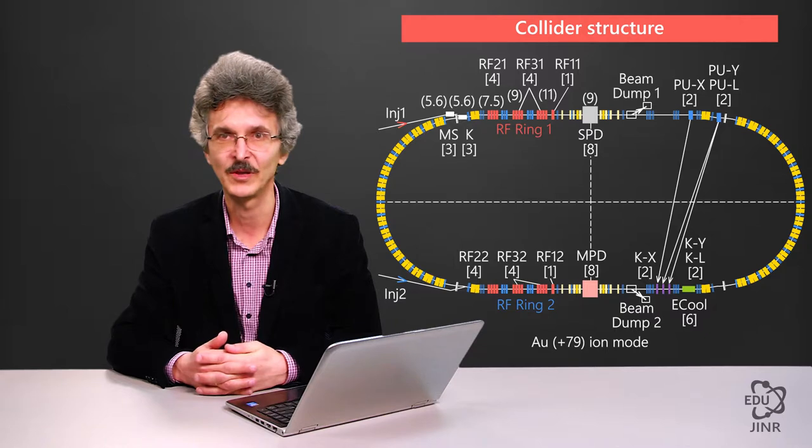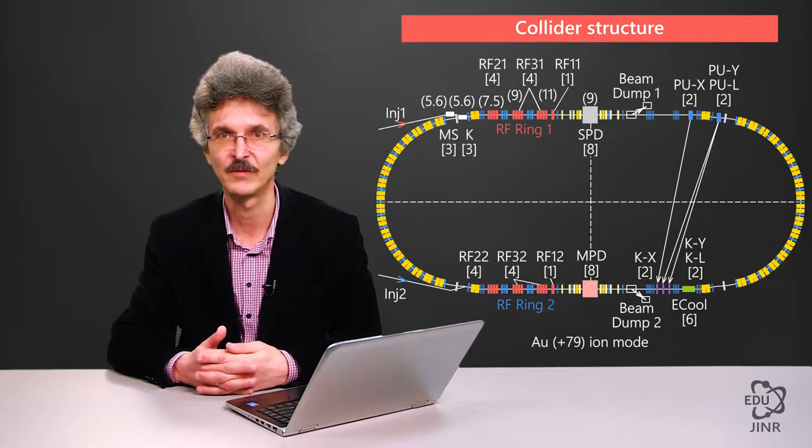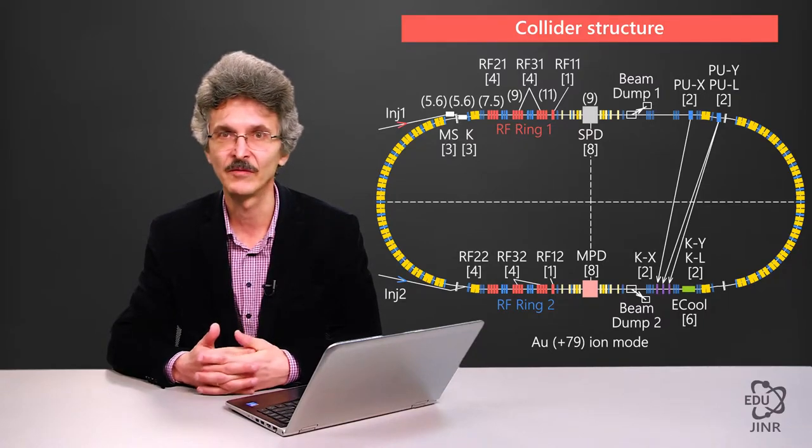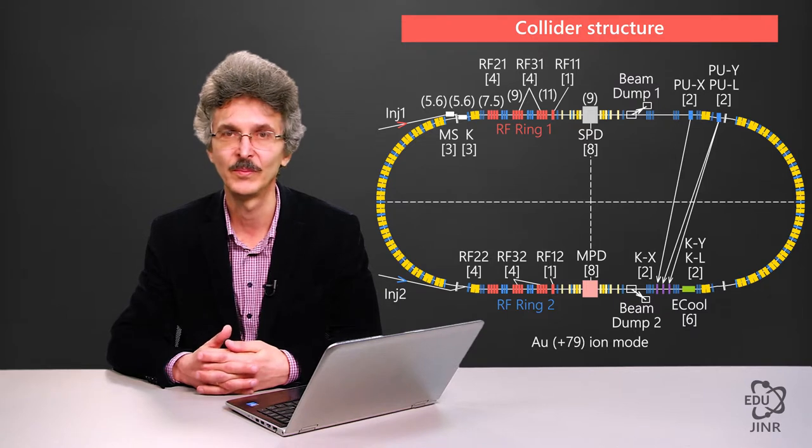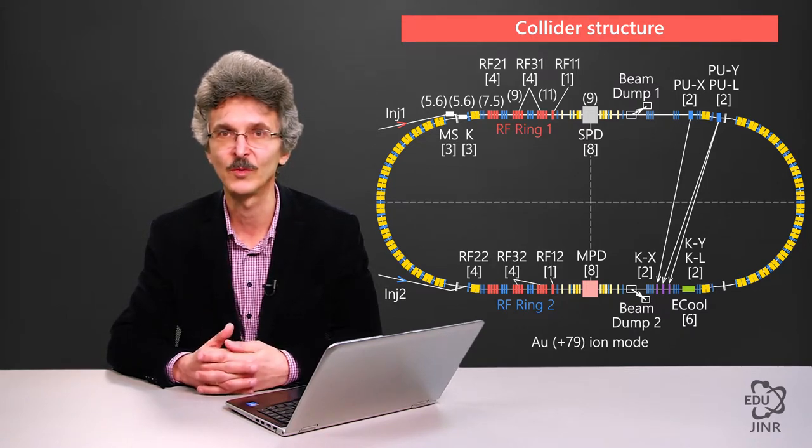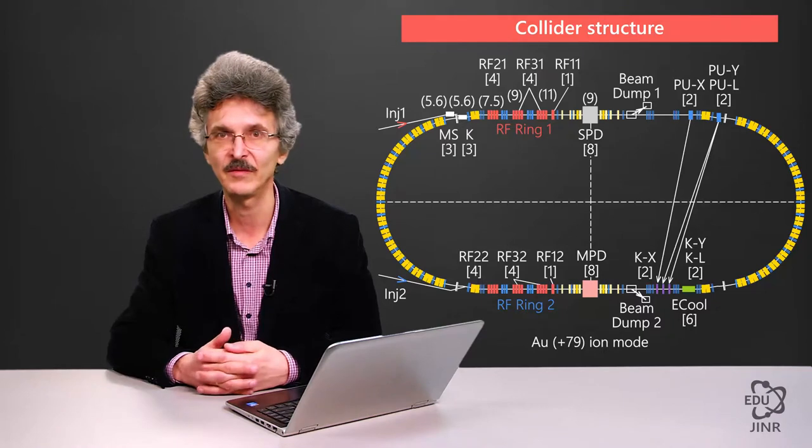Besides that, from the devices needed for the accelerator to function, a system of electron and stochastic cooling is deployed on the circumference of the collider. In case of, for example, an emergency at the accelerator, the beam has to be extracted from it in a regular way. There is an emergency beam dumping system and a beam feedback system designed to suppress coherent bunch oscillations.